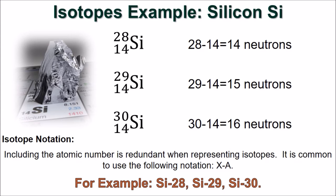The stable isotopes of silicon have atomic mass numbers of 28, 29, and 30. So, the three silicon isotopes must have 14, 15, and 16 neutrons respectively.